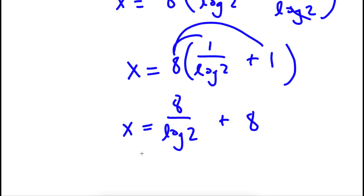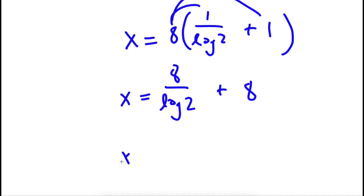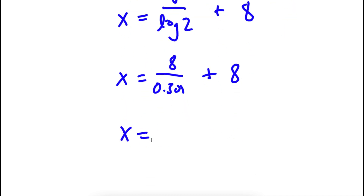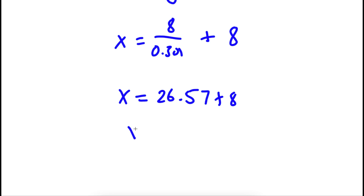Now log 2 is approximately 0.301. So I have 8 over 0.301, which equals 26.57, plus 8. So my final answer is 34.57.